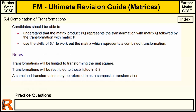5.4 is a combination of transformations, an extension of 5.3 where we had single transformations. Now we combine them by multiplying matrices. The key idea is that the product PQ means we do transformation Q first, followed by P. So PQ is Q then P, whereas QP would be P then Q. It's important to know which way around it goes.